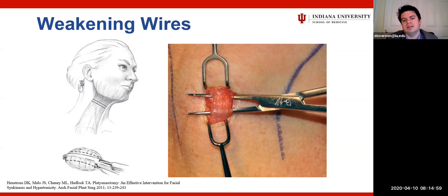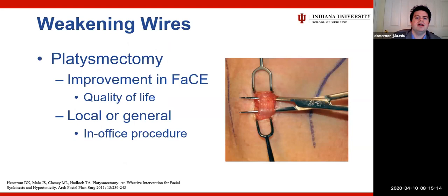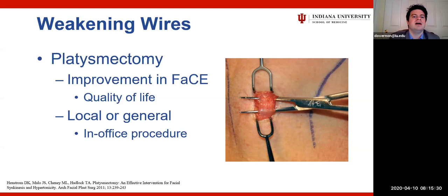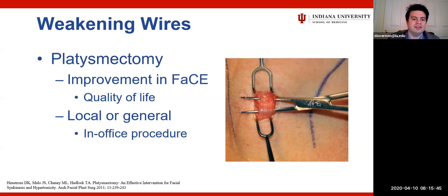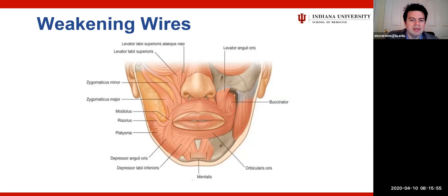We've realized that permanent changes can be achieved through myectomies — doing a platysmectomy rather than repeatedly injecting Botox gives patients a great benefit. Data from Tessa Hadlock's group showed improvement in facial scores with this approach. Some patients describe feeling tightness and pulling in the neck with severe synkinesis. This procedure can be done under general or even local anesthesia — a quick option that potentially avoids ongoing Botox visits.